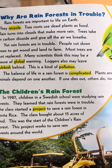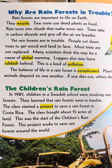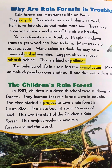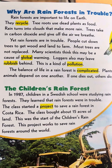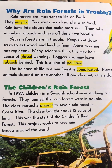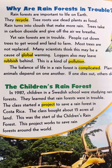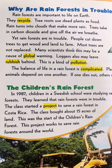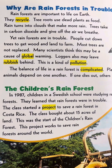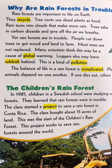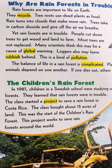Why are rainforests in trouble? Rainforests are important to life on earth. Tree roots use dead plants as food. Rain turns into clouds that make more rain. Trees take in carbon dioxide and give off the air we breathe.